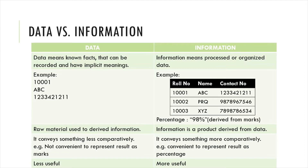Data is used to derive information, and information is the product derived from data. Data conveys something less comparatively, while information conveys something more. The meaning of data is less generic compared to information. Data is sometimes less useful, but information is more useful. When you process and organize raw data, it is converted into information.